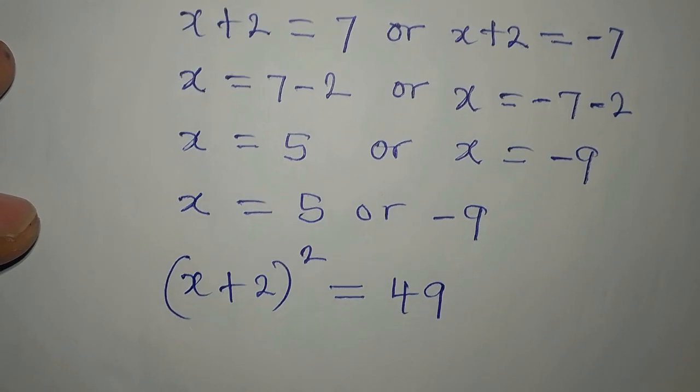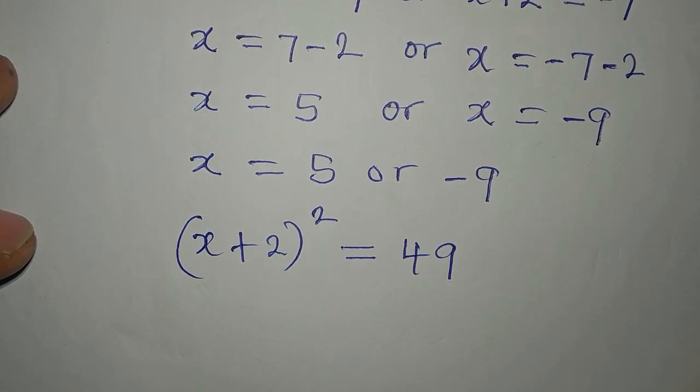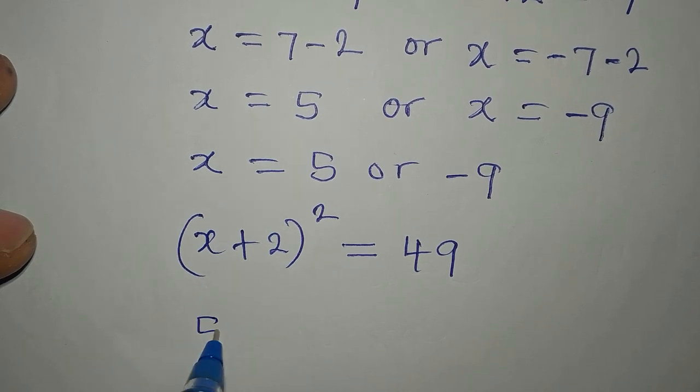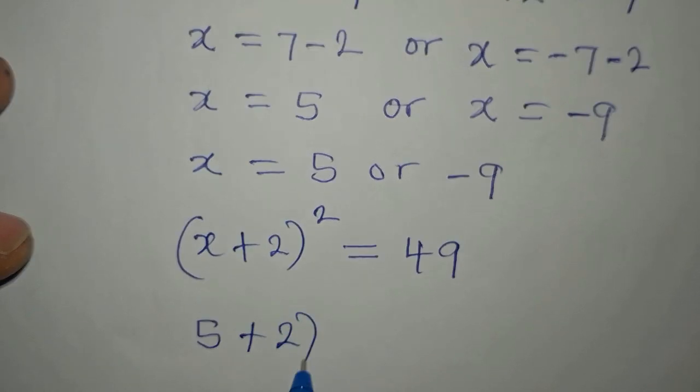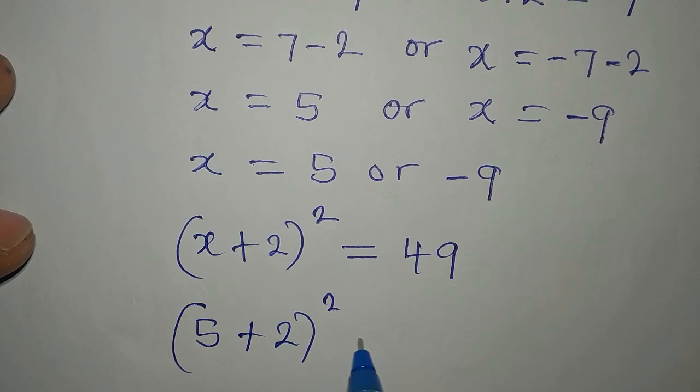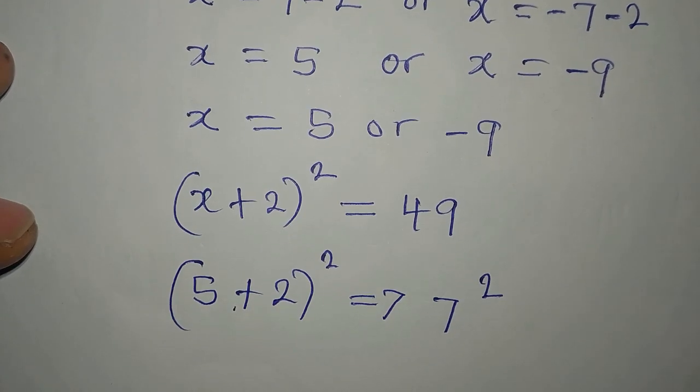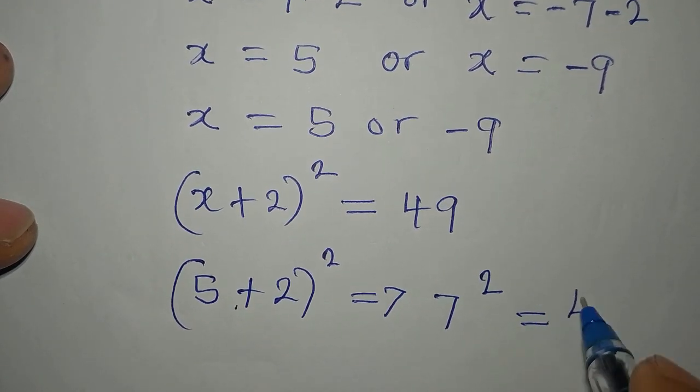The first thing I would do is to put the first value of x, which is 5. So if I put 5 here it becomes (5 + 2)², and this is the same as 7² because 5 + 2 is 7. This is equal to 49.